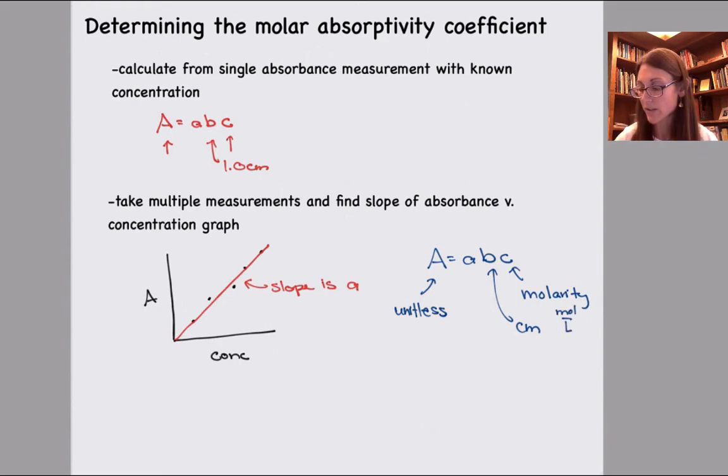Well, molarity is moles over liters, and so I have a liters in the denominator that I want to go away. So for the molar absorptivity coefficient, I'm going to put liters in the numerator. In the other two numbers, the path length and the molarity, I've got moles and centimeters that are in the numerator.